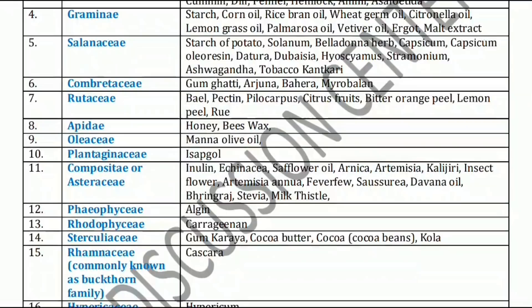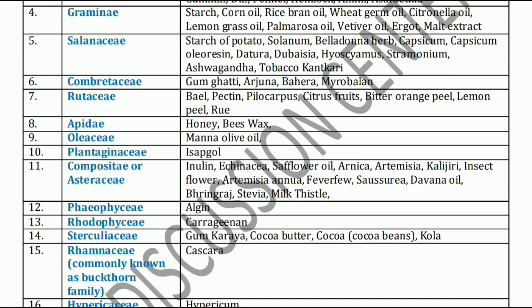Next, Combretaceae family. Combretaceae family includes Gum ghatti, Arjuna, Bahera, and Myrobalan. These all come under the Combretaceae family.